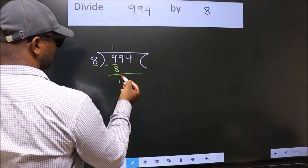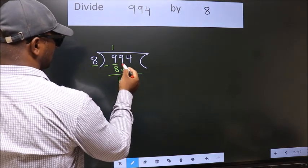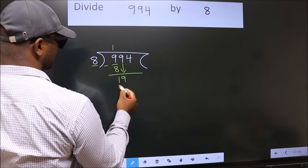After this, bring down the beside number. So 9 down. So 19.